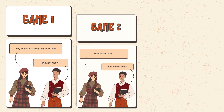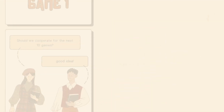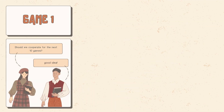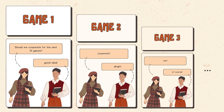Sometimes the same game is repeated multiple times, either for a fixed number of times or indefinitely. In these cases, we call them repeated games. Repeated games are different from one-shot games because the players can predict or observe the actions and payoffs of the previous rounds and adjust their strategies accordingly. Therefore, the players' choices in different rounds are not independent, and the history of the game matters.